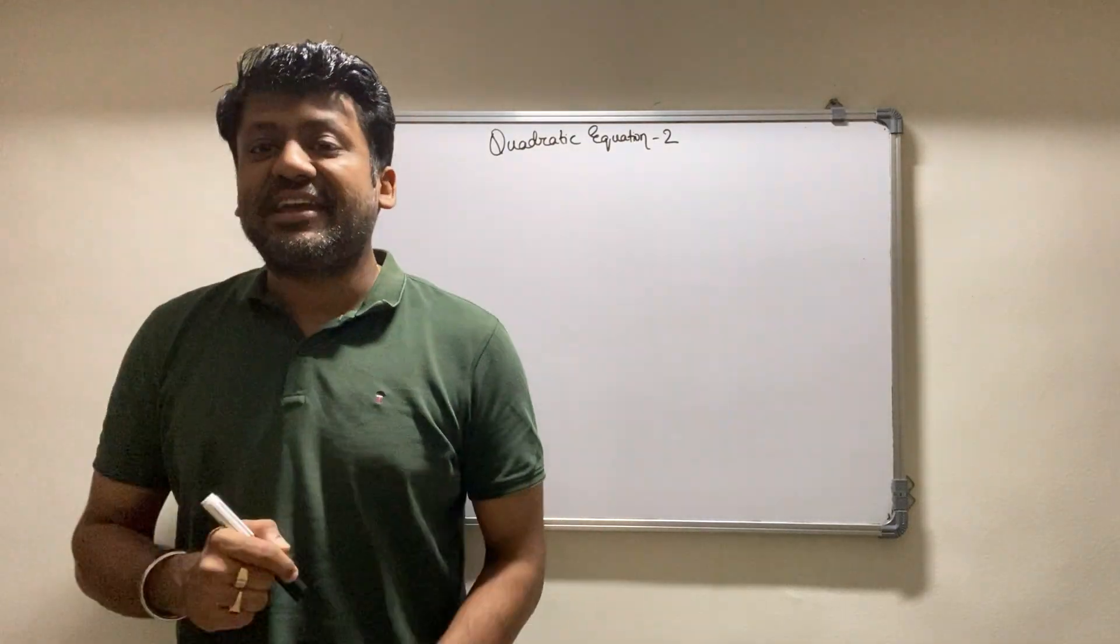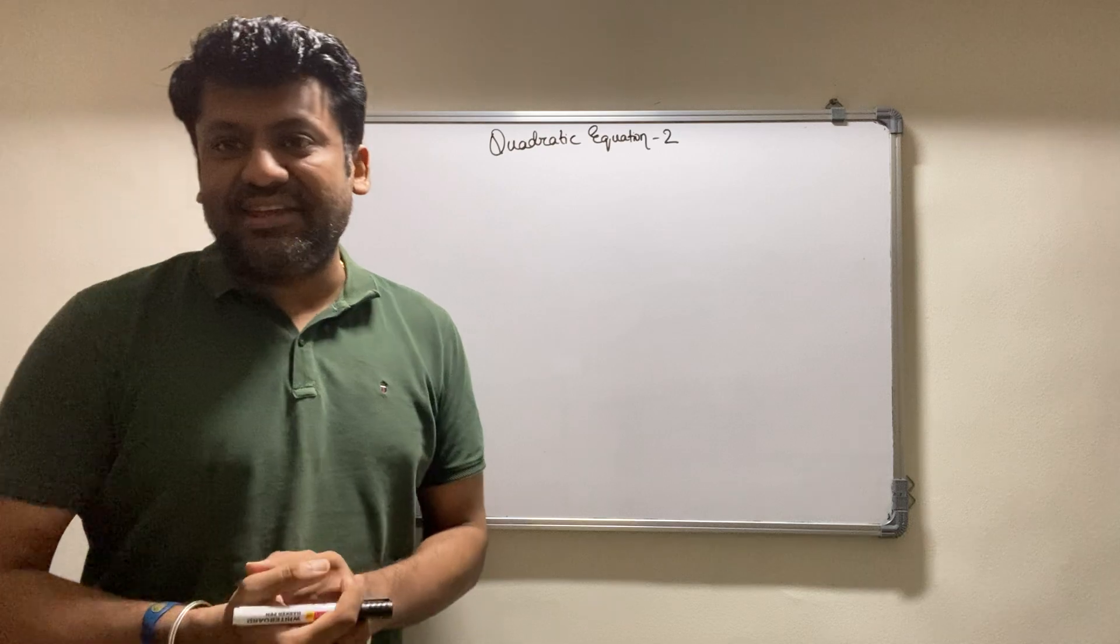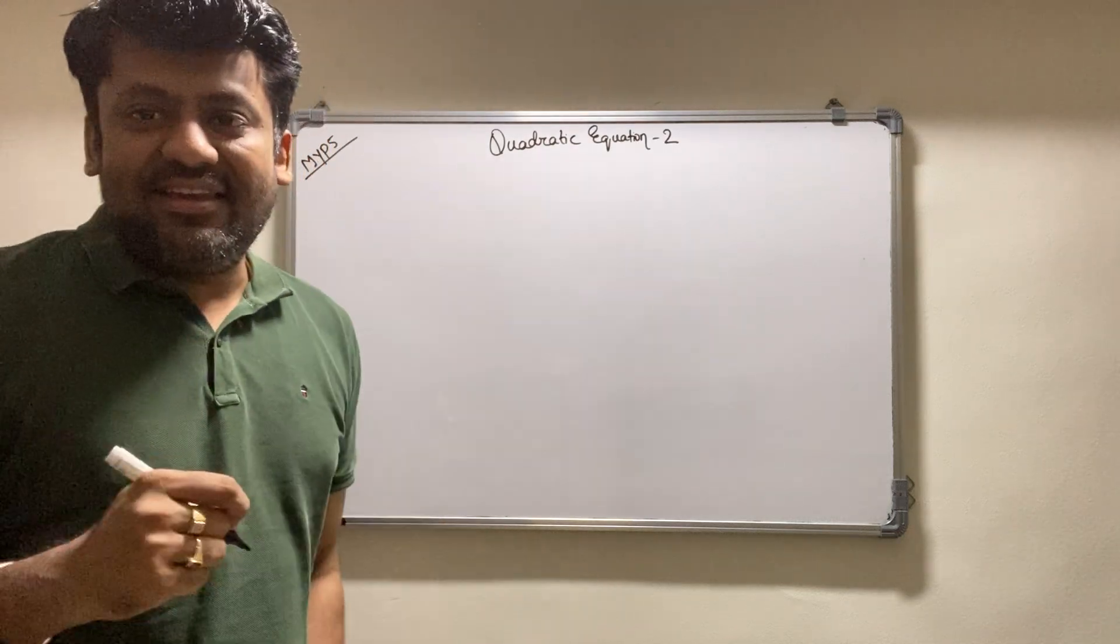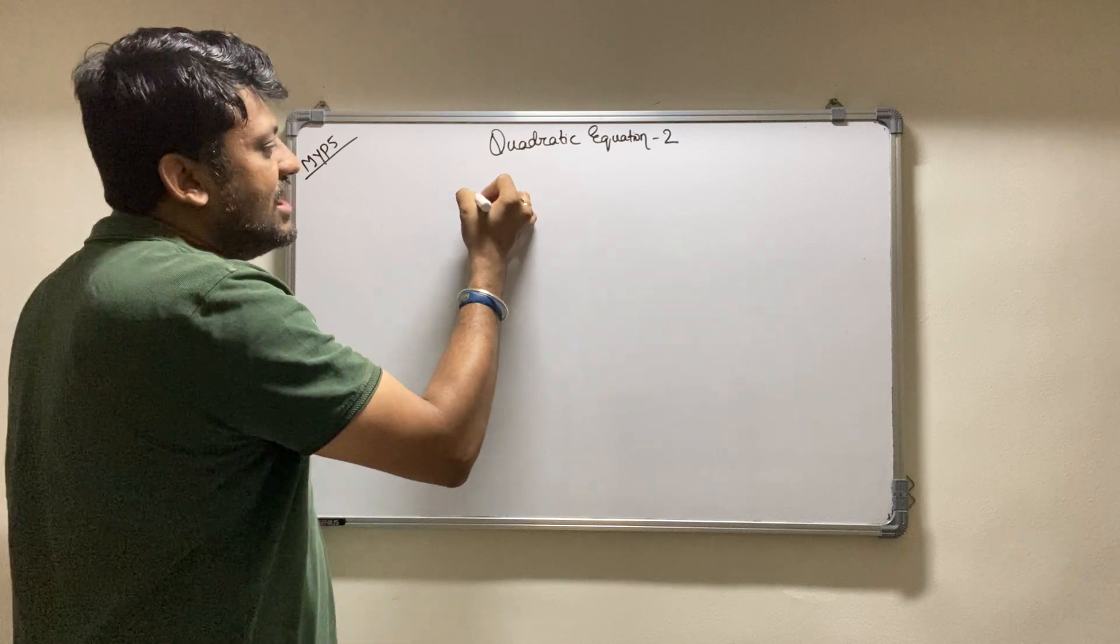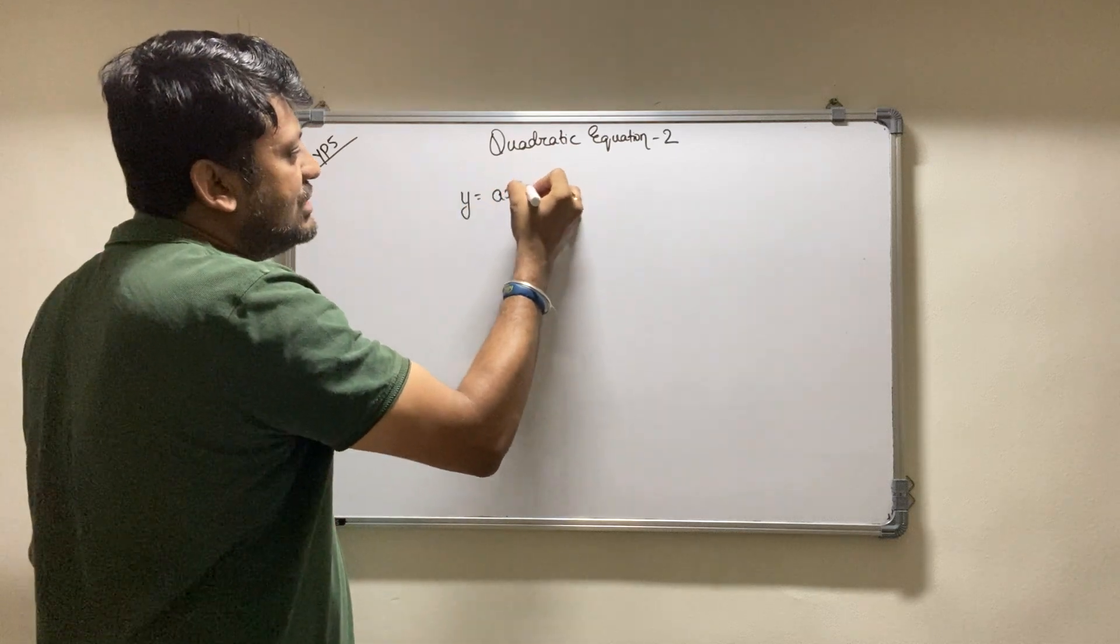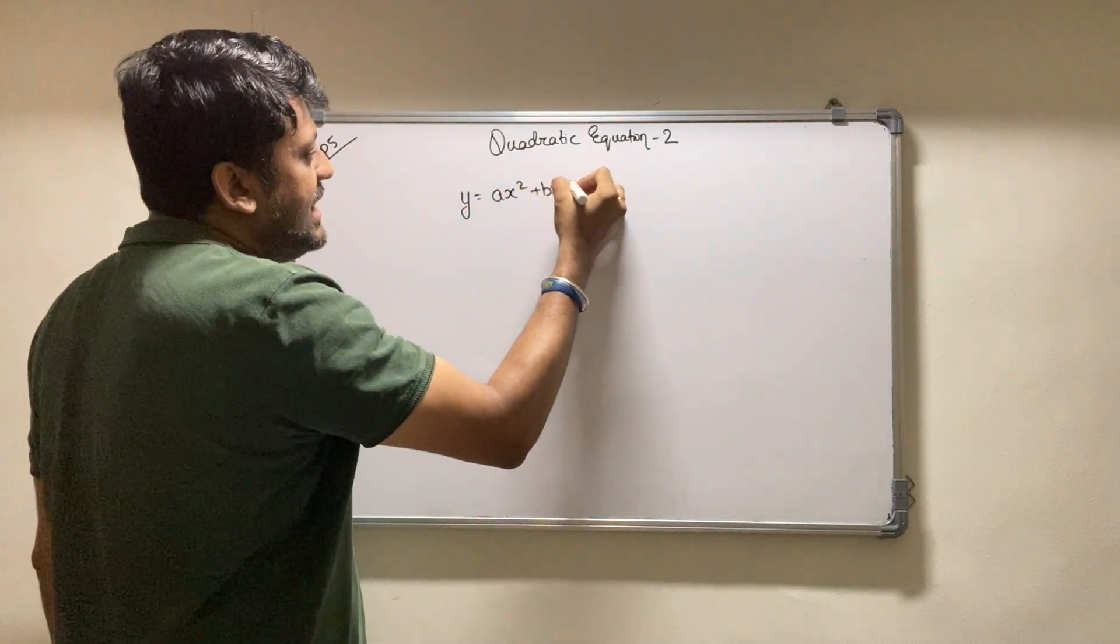Hello kids, this is the second lecture for MYP5 quadratic equation. Last class we learned that a quadratic equation is written as y equals ax squared plus bx plus c.